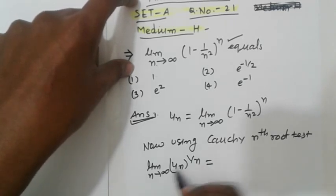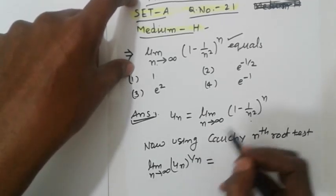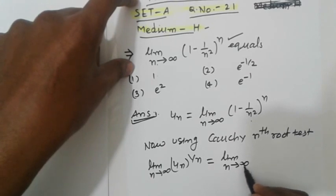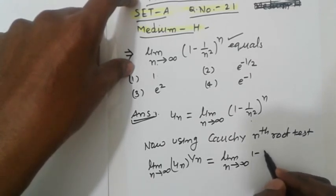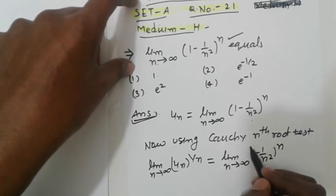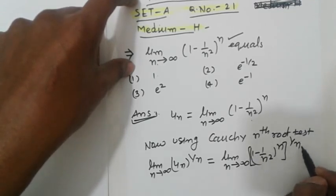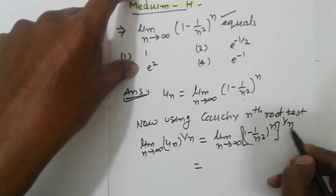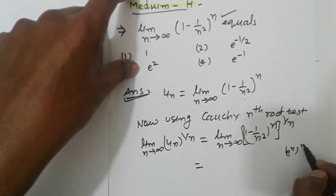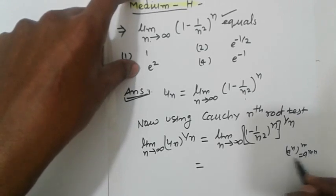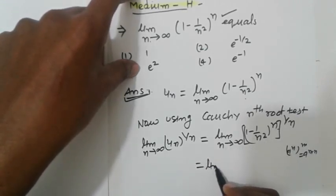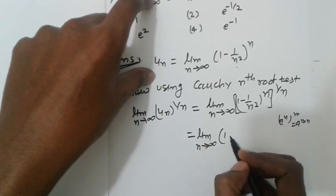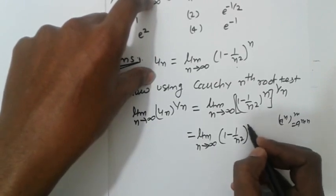Put the value of u_n. Limit as n tends to infinity of [(1 - 1/n²)^n]^(1/n). Using the property that power of a power is multiplication (a^m)^n = a^(m·n), we get limit as n tends to infinity of (1 - 1/n²) raised to n times 1/n, which cancels to give (1 - 1/n²)^1.